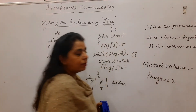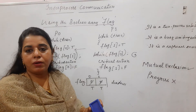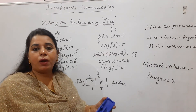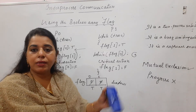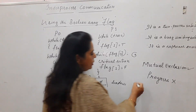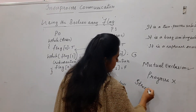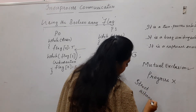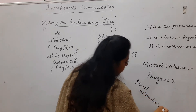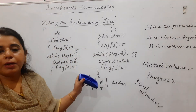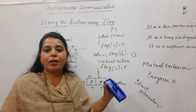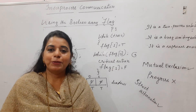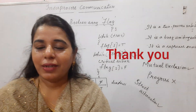To summarize: at least the strict alternation problem is solved in this solution — a process is not forced to wait for the other to alternate. But the progress condition is not satisfied due to the deadlock scenario. This is all about the solution using the boolean array called flag. Hope this session is useful to you all. Thank you, bye bye.